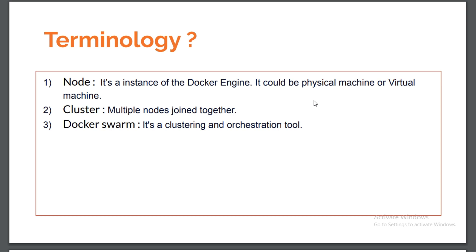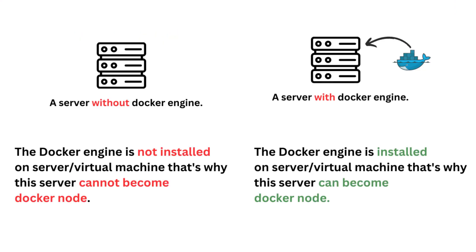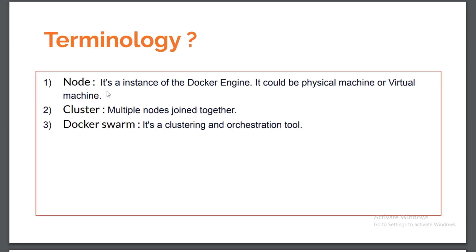The first terminology is 'node.' A node in Docker is nothing but an instance of the Docker engine. Imagine you have a physical machine and you install Docker engine on it — you can call that a node. A Docker node could also be a virtual machine on which Docker engine is installed. In summary, a Docker node is any instance on which Docker engine is installed, whether physical or virtual.